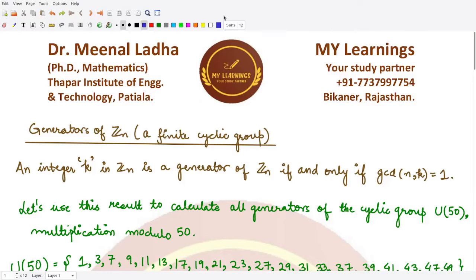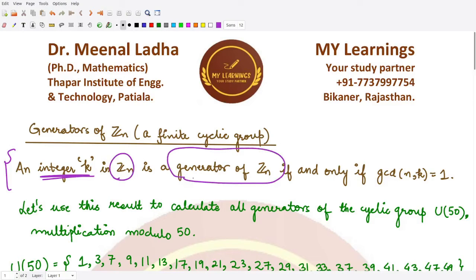Hello everyone, welcome to this video. We'll be talking about a result based on the generators of the group Zn, which is a finite cyclic group. The result tells us that an integer k in Zn forms a generator of this group if and only if the gcd of n and that integer is equal to 1.